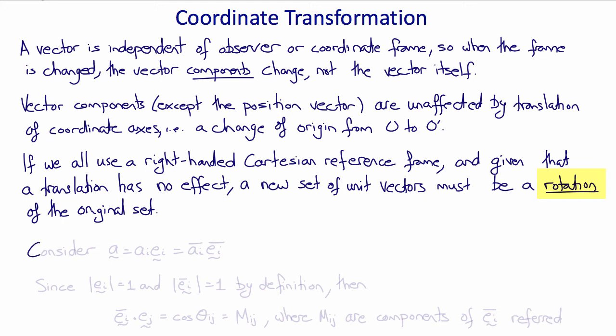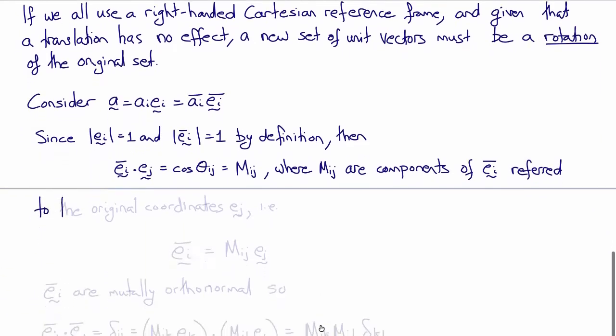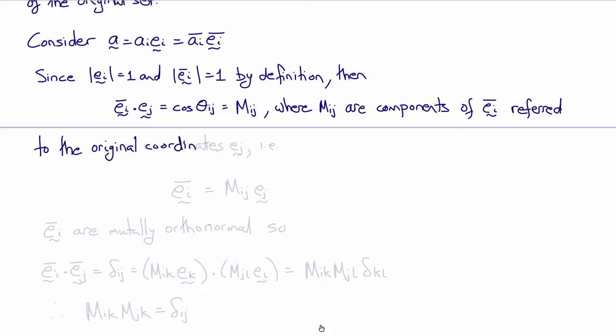Let's consider the vector a with components ai in a coordinate frame with unit vectors ei, and components ai bar in a different coordinate frame with unit vectors ei bar. Now since by definition the magnitudes of ei and ei bar are 1 because they're unit vectors, then the dot product between them ei bar dot ej would equal the cosine of the angle between i and j, and since there are nine combinations, this would be a matrix of angle cosines, where you can think of the components of that matrix as the components of the new unit vectors ei bar, referred to the original coordinates ej.